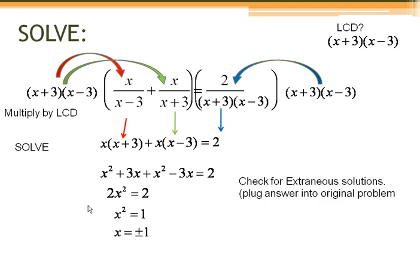All right, and then last step is we've got to check. So we plug in positive 1, see how it works. Got 1 minus 3, 1 on top, plus 1 over 1 plus 3 equals 2 over 1 squared minus 9. Do a little bit of computation here. We got the negative 2, we got the 4, and we got the negative 8. And you just want to verify if they are correct. And these two combine to get negative one-fourth. This simplifies to negative one-fourth. It checks out. We say that that's a valid solution. So 1 works.